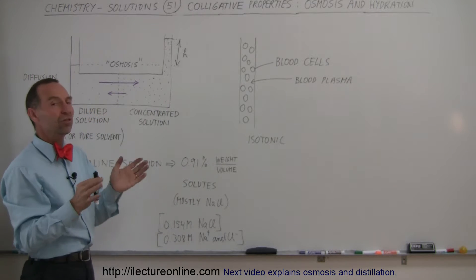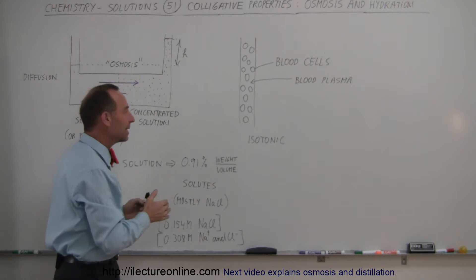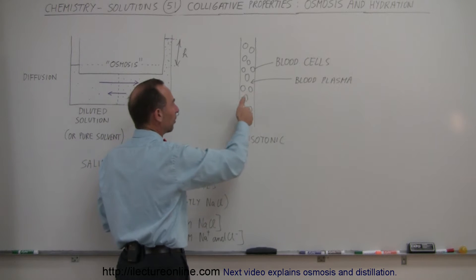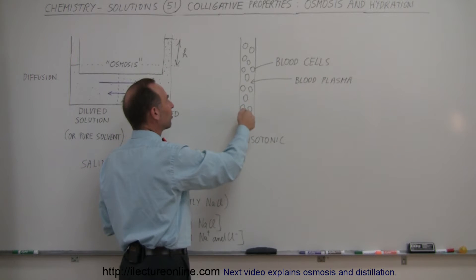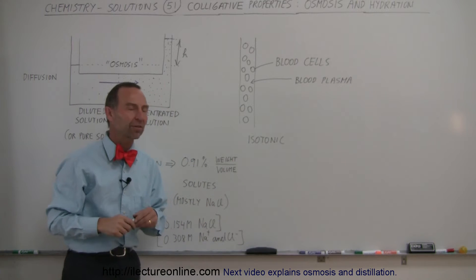The ideal situation for the body is that the solution, the plasma, and the blood cells are isotonic. The concentration of the solution inside the blood cells has about the same concentration as the solution outside the blood cells.